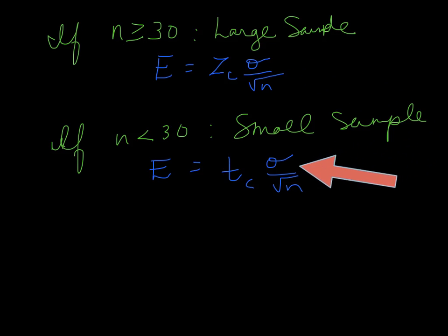If it's a small sample, you use something called the T distribution in your error formula. That's what your calculator is going to use if your sample size is less than 30.